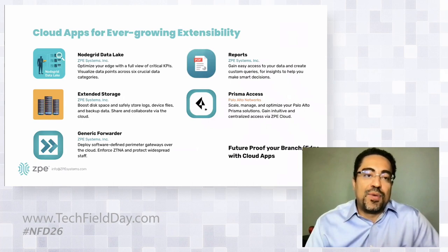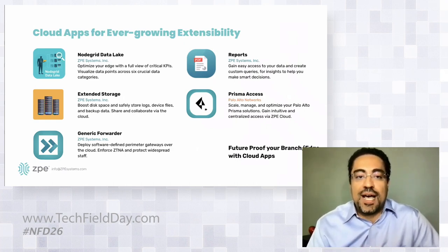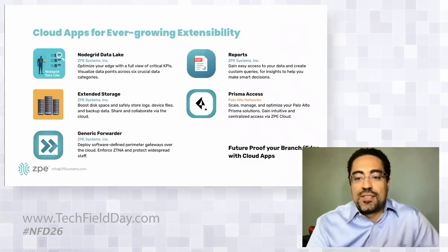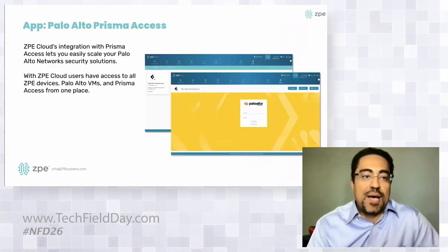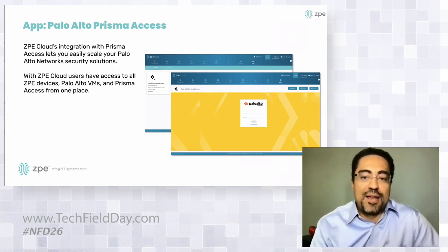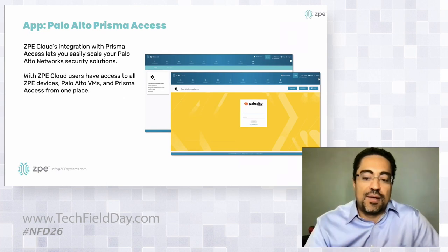On top of the cloud, we have cloud apps. The cloud does management and configuration, and we generate a lot of different data vectors that sit in our NodeGrid Data Lake for other apps to sit on top of. As an example, with Palo Alto Prisma Access as part of their SASE, we've integrated such that our box can not only allow you to manage and log into the SASE framework, but also be the on-ramp for Prisma Access in a very seamless fashion.